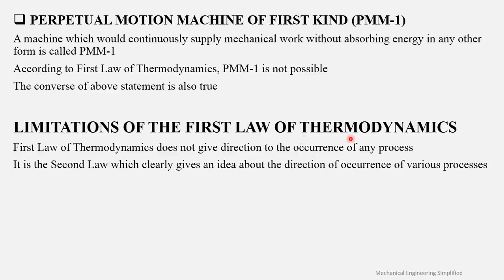There is an important limitation of the first law of thermodynamics: it does not give the direction of occurrence of any process. Given two state points, the first law cannot tell you whether a process is feasible or not. It is the second law of thermodynamics that clearly indicates the direction of occurrence of various processes, which we will study in later lectures.